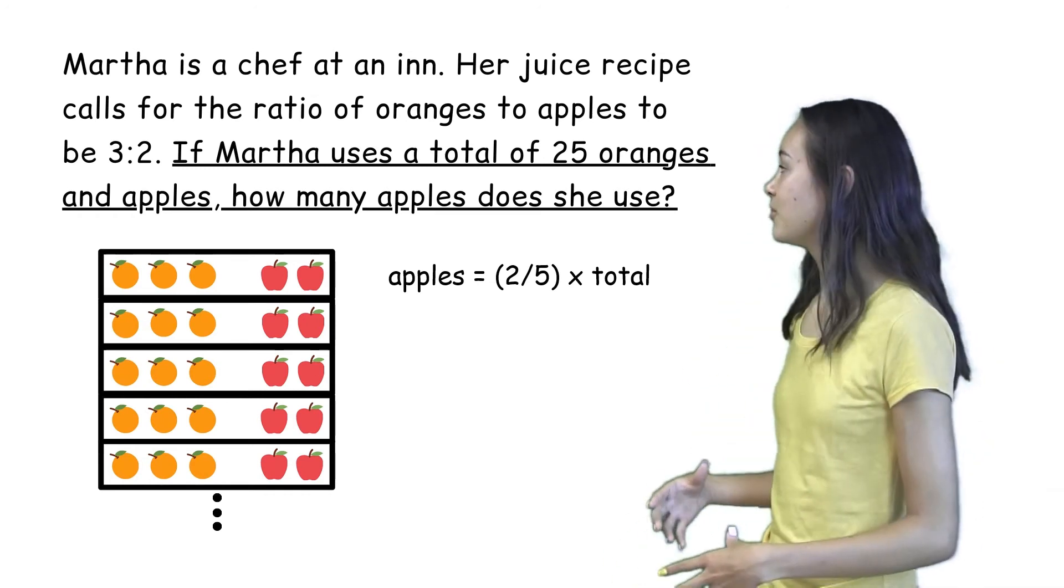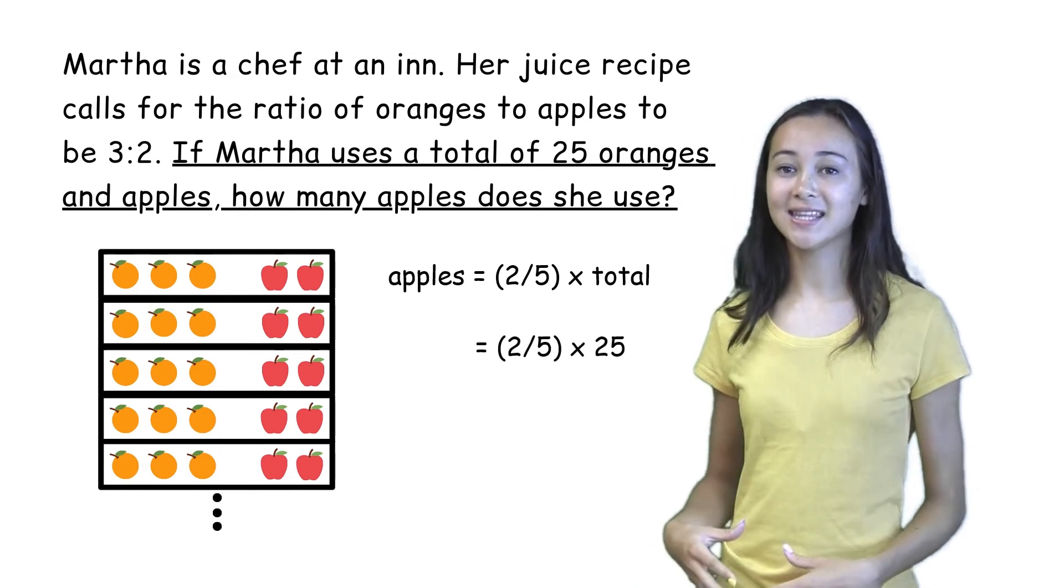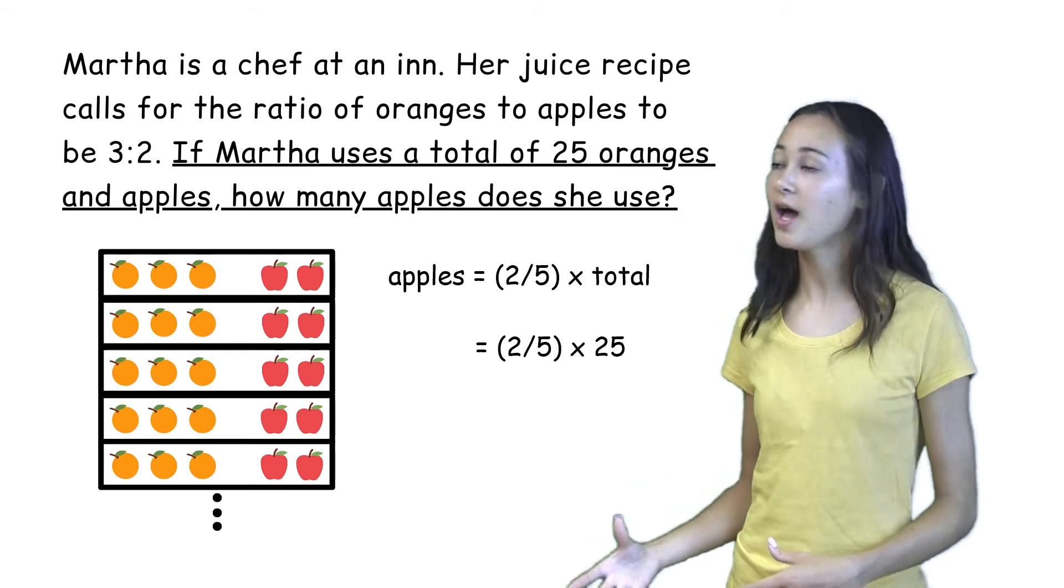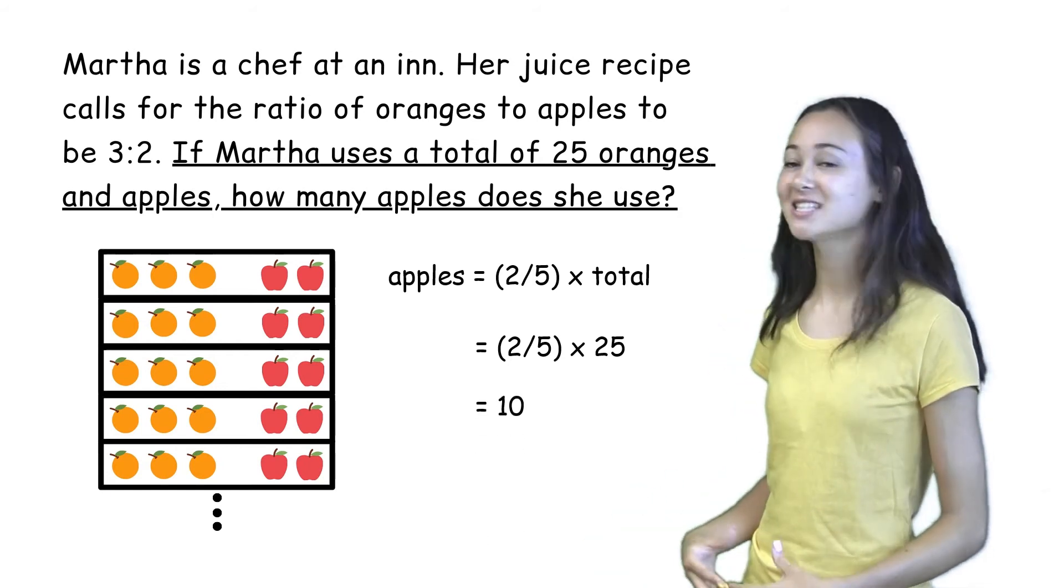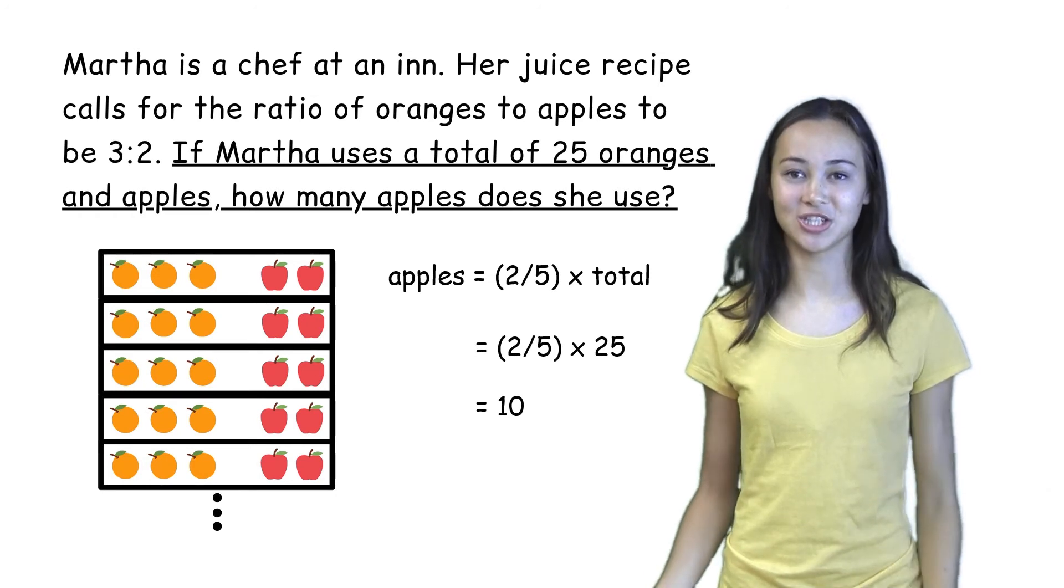And since Martha uses a total of 25 fruit, to find the number of apples, we can do two-fifths times 25, which is 10. So Martha uses 10 apples to make her juice.